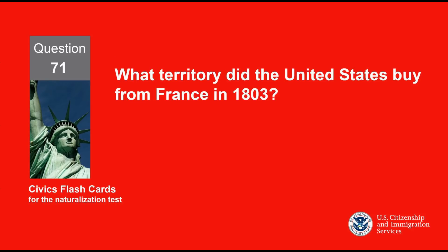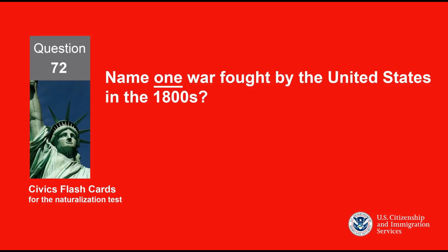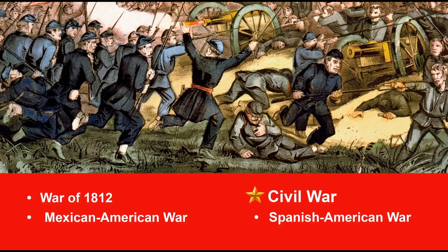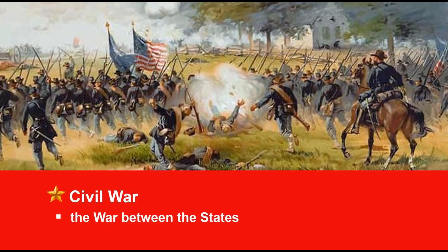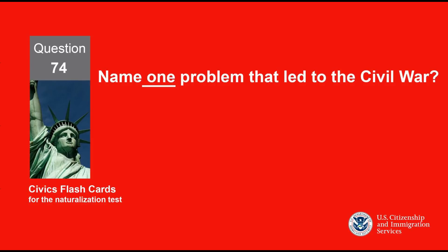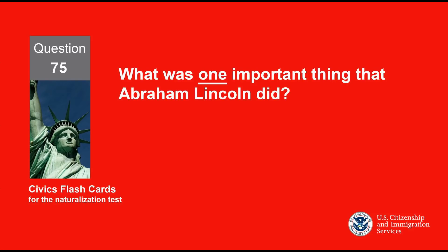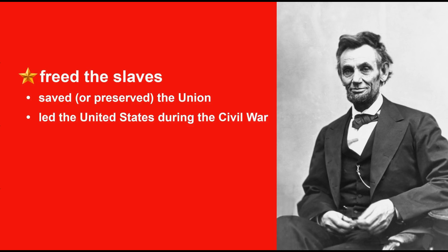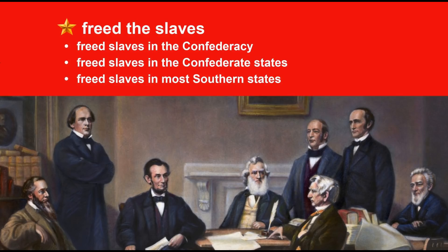What territory did the United States buy from France in 1803? Louisiana. Name one war fought by the United States in the 1800s. Civil War. Name the U.S. war between the North and the South. Civil War. Name one problem that led to the Civil War. Slavery. What was one important thing that Abraham Lincoln did? What did the Emancipation Proclamation do? Freed the slaves.